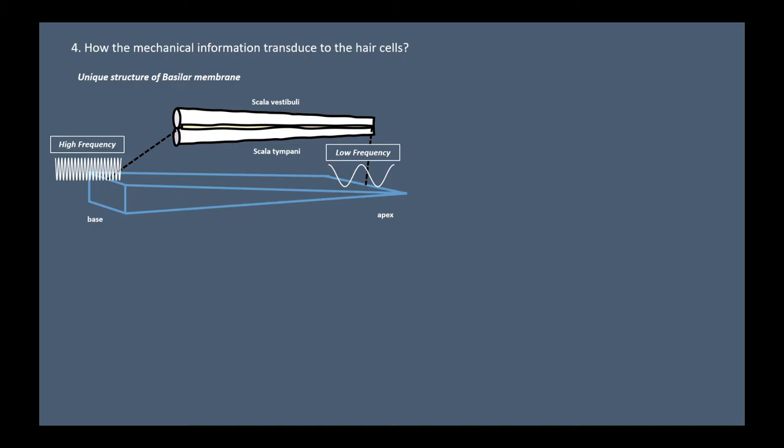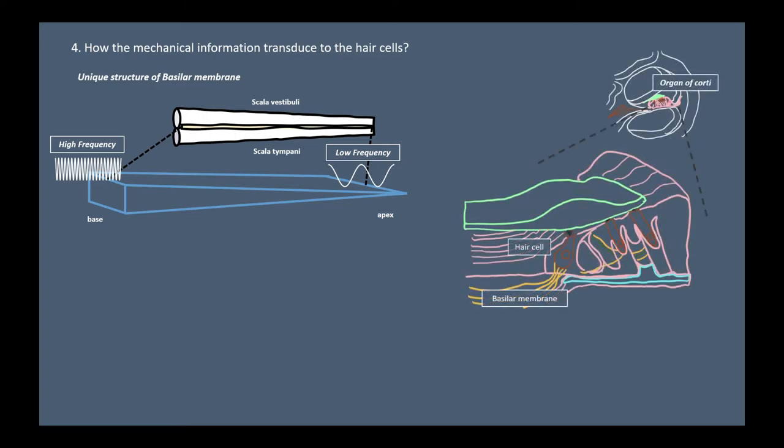The transduction from mechanical information to the electrical information occurs on the organ of Corti. The main parts of the organ of Corti are basilar membrane, hair cell, and tectorial membrane. Organ of Corti is the receptor organ that extends along the basilar membrane. Each organ of Corti contains approximately 16,000 hair cells innervated by approximately 30,000 afferent nerve fibers which carry information to the brain. Hair cells and auditory nerve fibers are tonotopically organized and this is a really important feature of the auditory system.